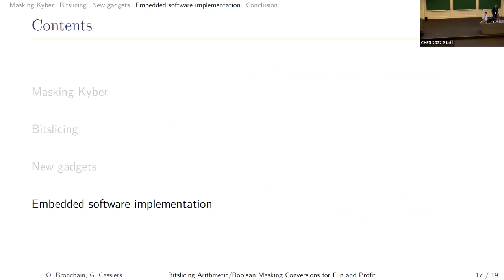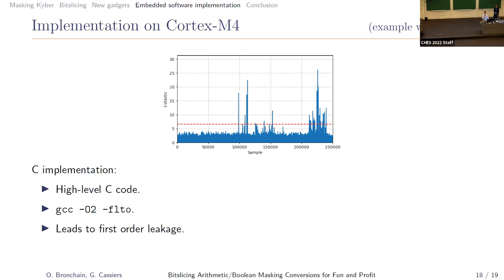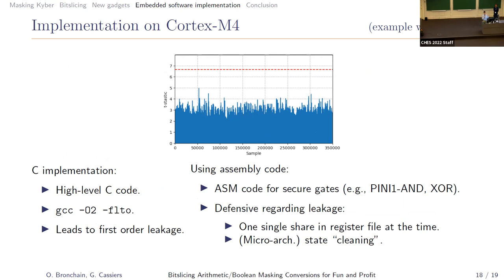We also implemented everything in C with GCC, but as you may know, this ends up having first-order leakages. To remove these leakages, we wrote only AND gate, XOR gate, and copy operations in assembly in a very defensive manner — putting one single share at a time in the register file and adding architectural cleaning by writing random data to memory and flushing it. This induced a slowdown factor of 1.6.